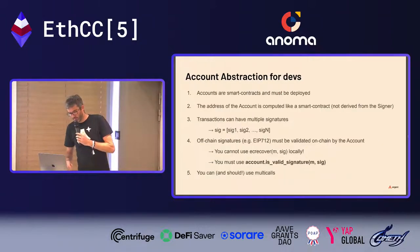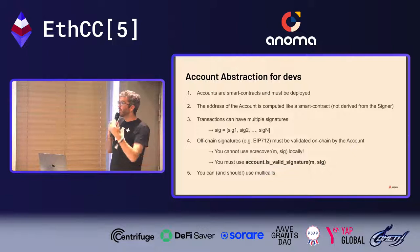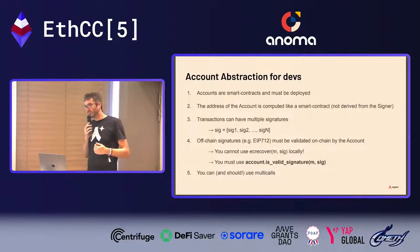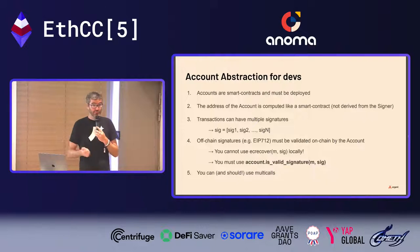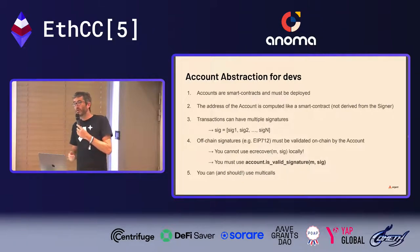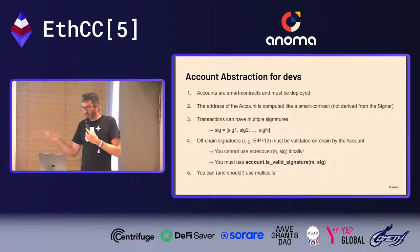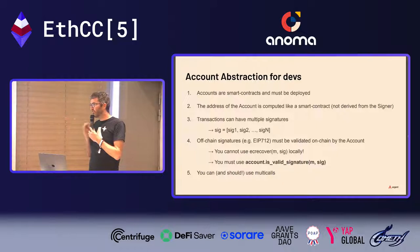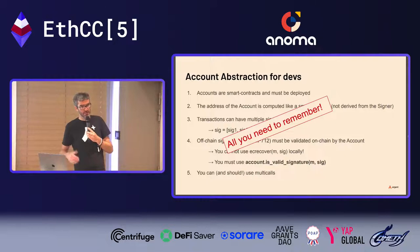We also convinced StarkNet to put multicalls by default, meaning every transaction can be a multicall. For developers: on a chain with account abstraction, accounts are smart contracts and need to be deployed; the address is computed as a smart contract address, not derived from a signer; transactions can have multiple signatures, so don't assume just one signer; use isValidSignature for off-chain validation; and you can and should use multicalls.